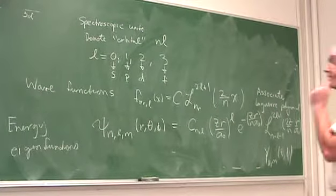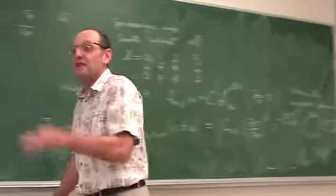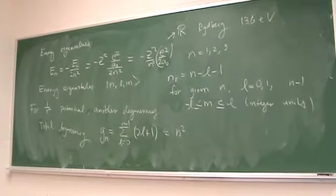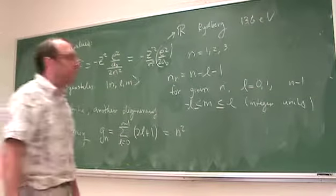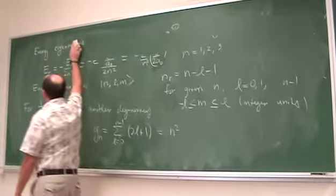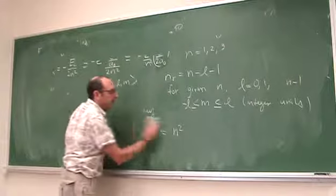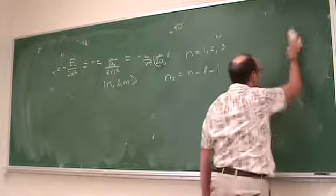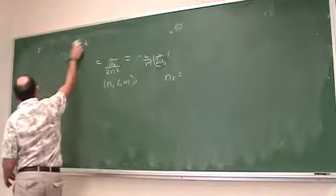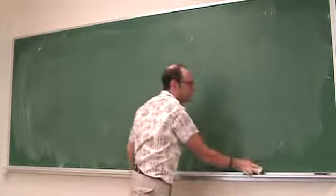I want to conclude this lecture by telling you something maybe you don't know. The question is: why, for a 1/r potential, do we have this l-degeneracy? It's because there is another conserved quantity in the problem, discovered by Laplace, but named the Runge-Lenz vector.